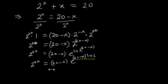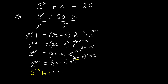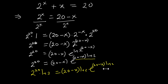Now observe carefully: the exponent here is (20−X)·ln 2, but what is in front is (20−X), which is different. Before we can apply the Lambert W function, the coefficient and the exponent must match. So we multiply both sides by ln 2, giving 2^20·ln 2 on the left. This side becomes (20−X)·ln 2 · e^((20−X)·ln 2).